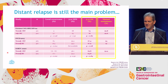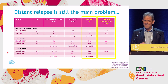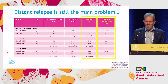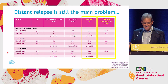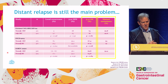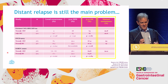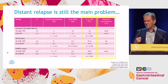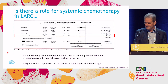As you've heard from Karen, distant relapse, if you look at these big series, does remain a problem. So although there's heterogeneity and some patients do well, there is still a lot of patients who die of systemic disease. And thus, there is a compelling need to try and reduce that risk.